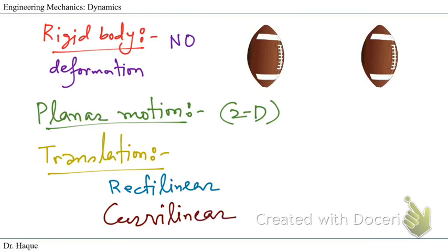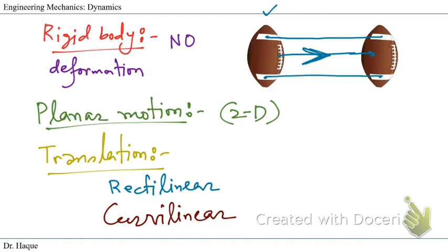Let's see an example of rectilinear translation. Consider a football — a football is made of many particles. Take one particle at the top and one at the bottom. If the football is moving in a straight direction, after moving to a new position the line connecting those two particles remains a straight parallel line with no change in orientation. They are just translating. This scenario is called rectilinear translation.